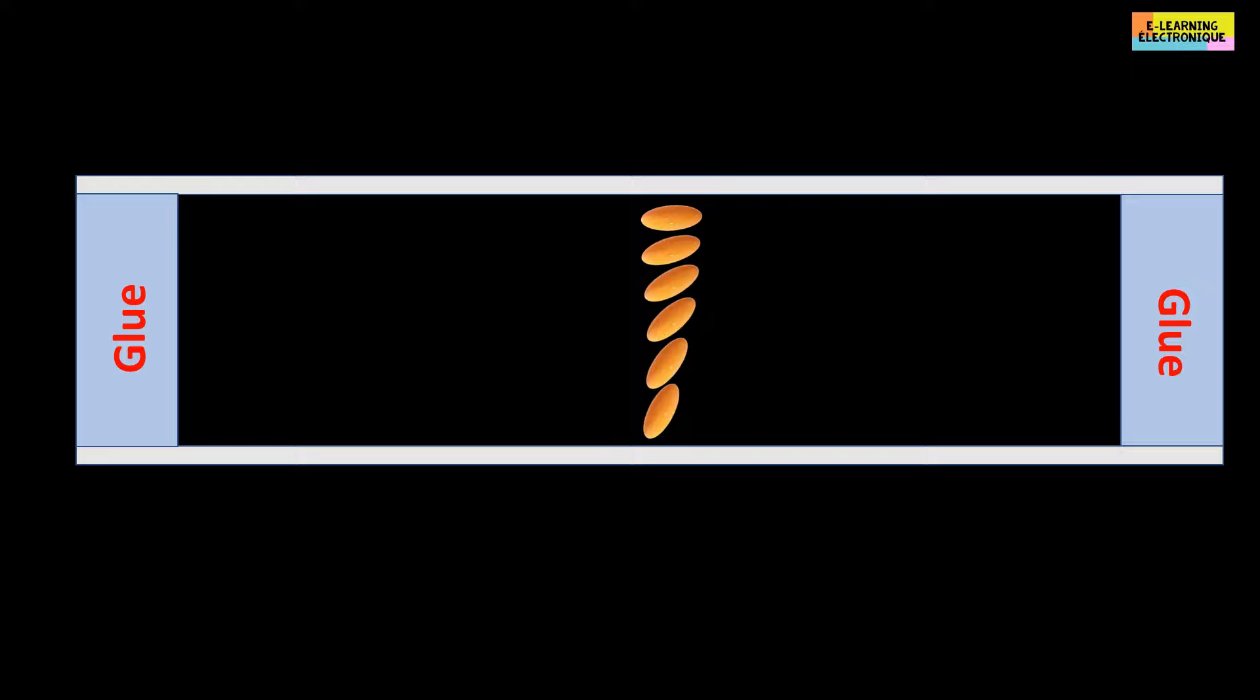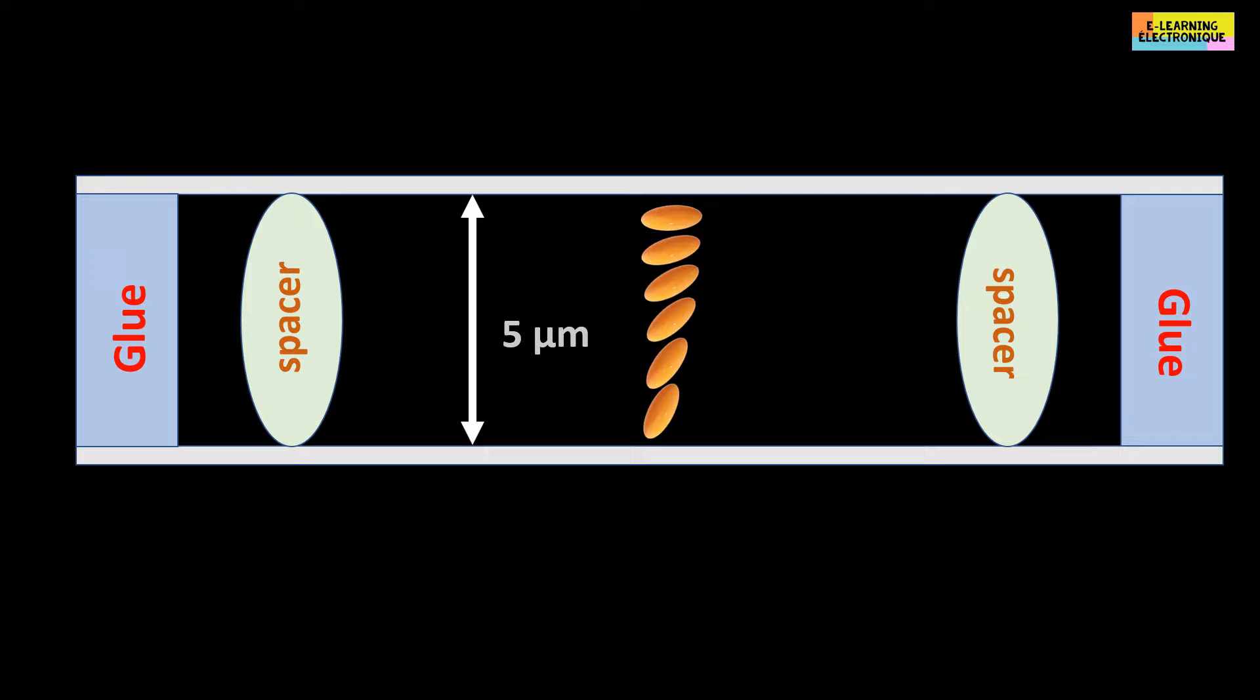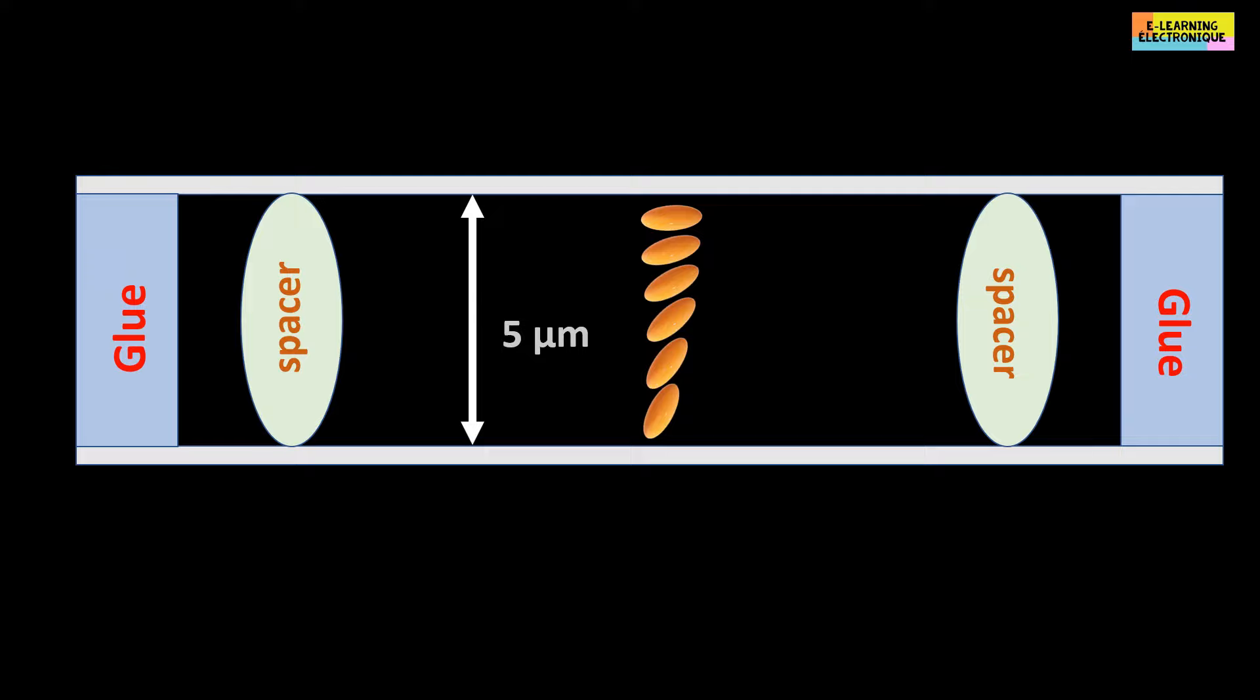The liquid crystal is enclosed between the two glass plates. To maintain the spacing between the two glass plates, we place holding balls to keep a uniform spacing between the two plates of a few micrometers.